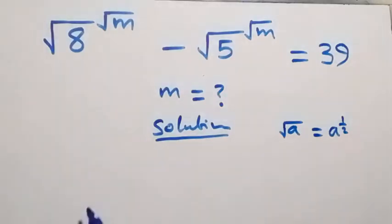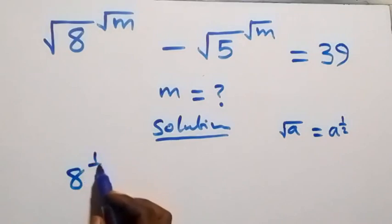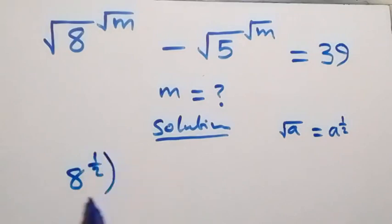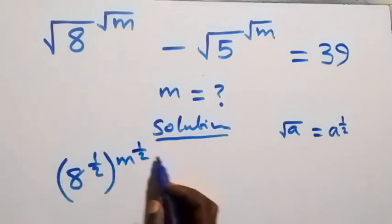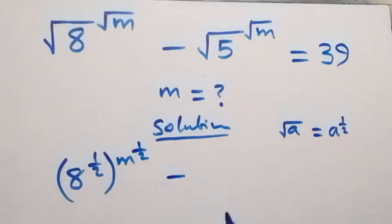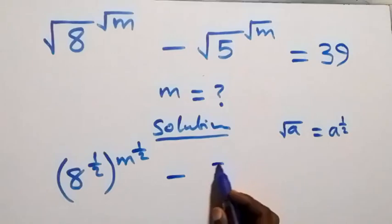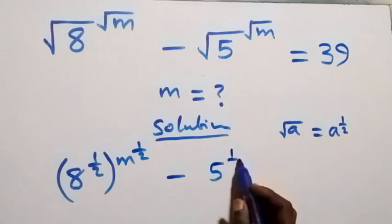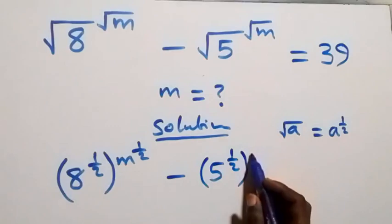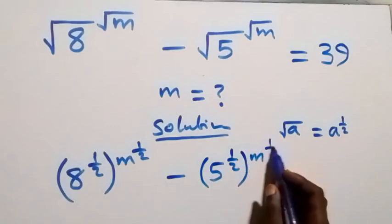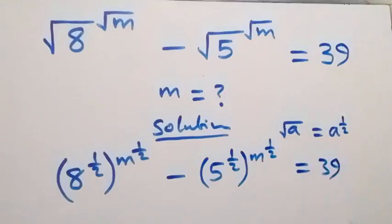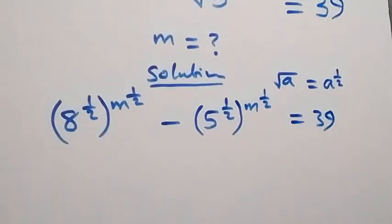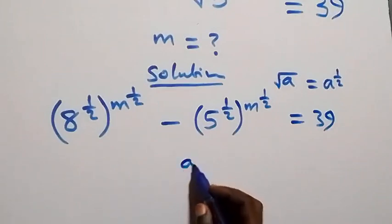What we have here we can rewrite: this becomes 8 raised to power half, then raised to power root m, and also m raised to power half. Then minus, equally here, this is 5 raised to power half, then raised to power root m, as well as m raised to power half, and equals 39 on this side.